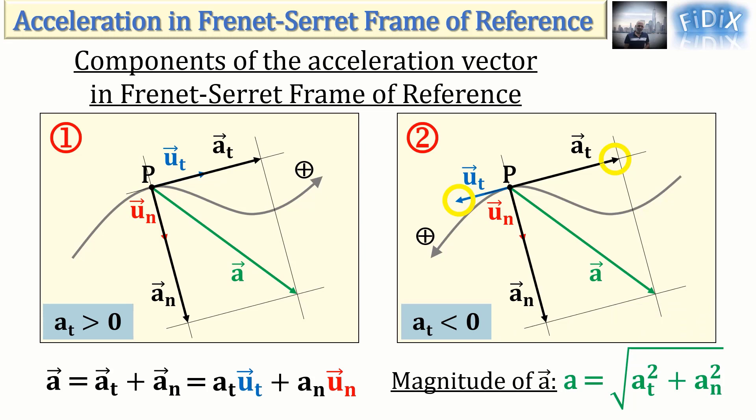This is not the case for a_n, since vectors a_n and u_n always have the same direction. Therefore, the scalar component a_n is always positive.